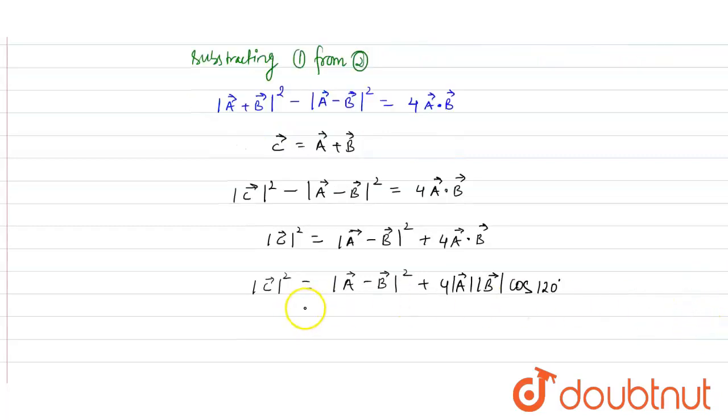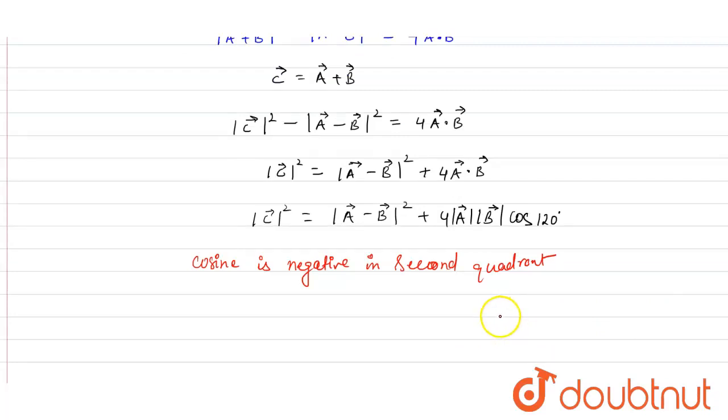Now, as we know that cos 120 is negative in the second quadrant. So what we can conclude is C must be less than A minus B.